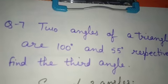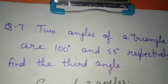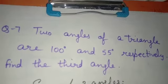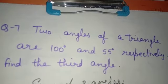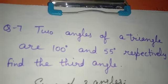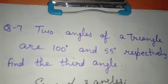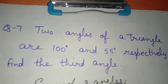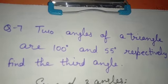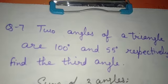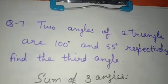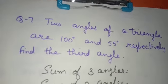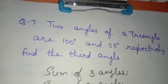Let's start question number 7, the last question of worksheet 2. Two angles of a triangle are 100 degrees and 55 degrees respectively — find the third angle. We follow the same approach: first write the sum of three angles, which is 180 degrees.